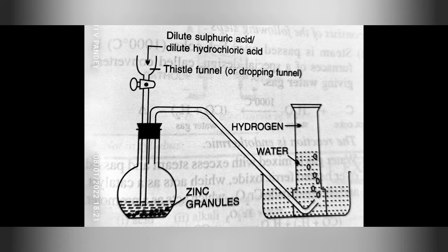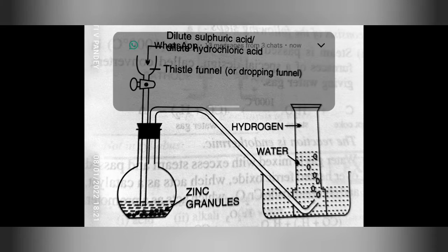In this setup, place pieces of granulated zinc in a flat-bottom flask. Fit it with an airtight cork with two holes. Through one hole pass a thistle funnel with a long stem provided with a stopper, and through the other hole pass a delivery tube. Pour dilute sulfuric acid or hydrochloric acid through the funnel and the reaction will gradually start.